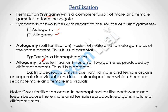Allogamy is cross-fertilization in which the fusion of two gametes takes place where the male and female gametes are present in different parents — thus it is biparental. For example, in dioecious plants which have male and female organs on separate individuals, and all species in which male and female are separate individuals. Cross-fertilization also occurs in some hermaphrodites like earthworm and leech because their male and female reproductive organs mature at different times.